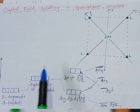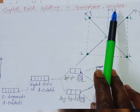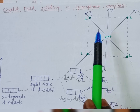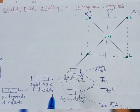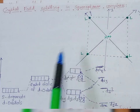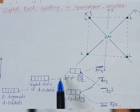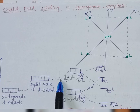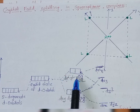We get the square planar geometry by removing the two trans ligands along the z-axis from a regular octahedral geometry. That is why the splitting of d-orbitals into different energy levels has its origin from octahedral geometry. Therefore, the splitting of 5 d-orbitals will take place according to the octahedral geometry.